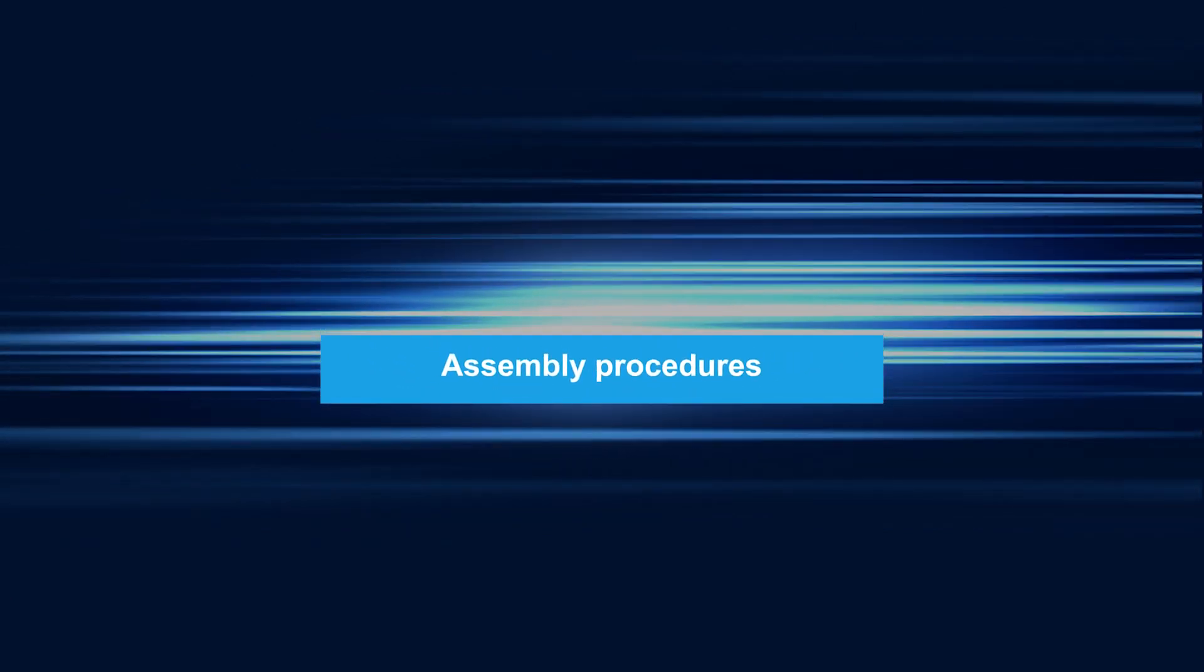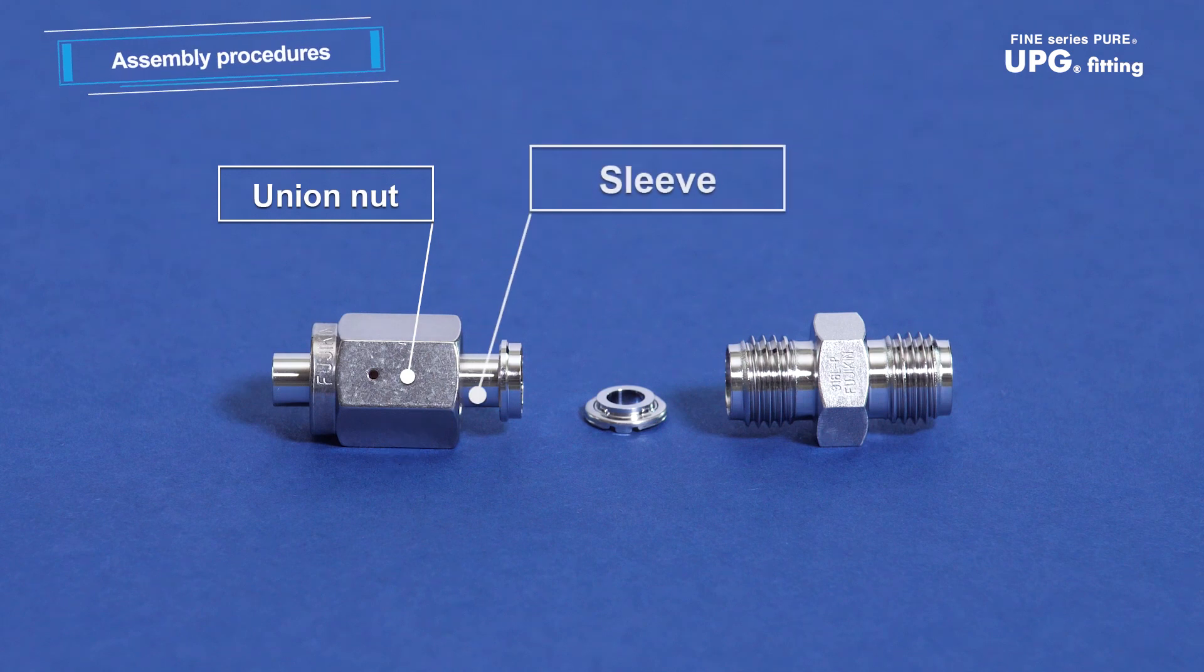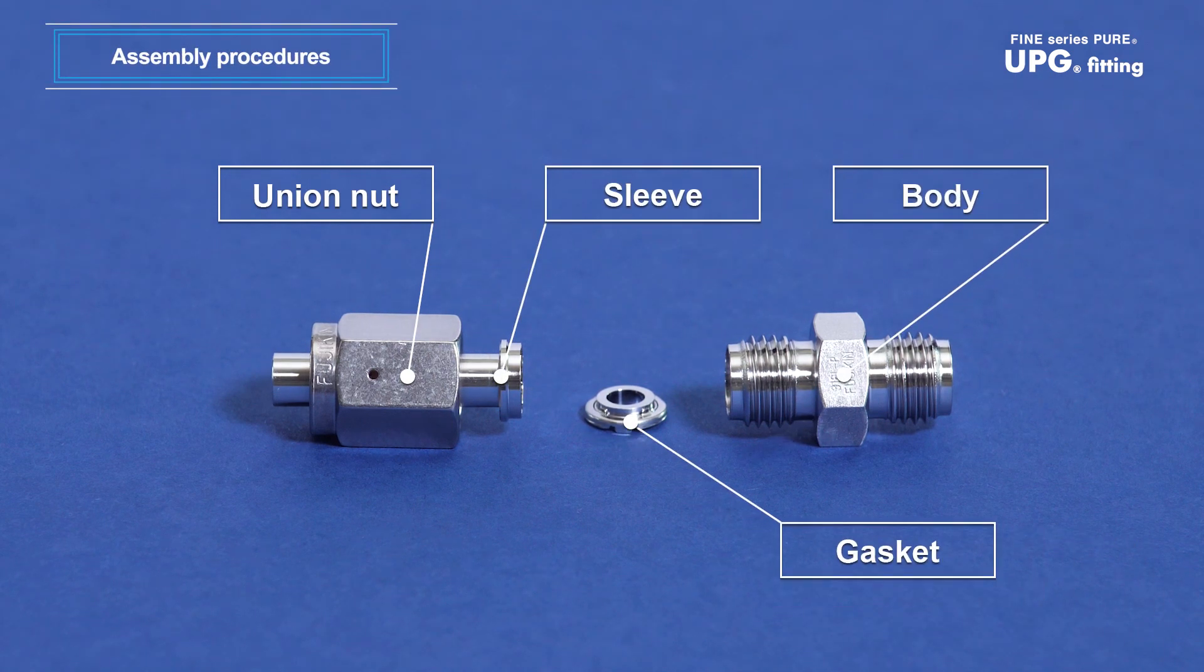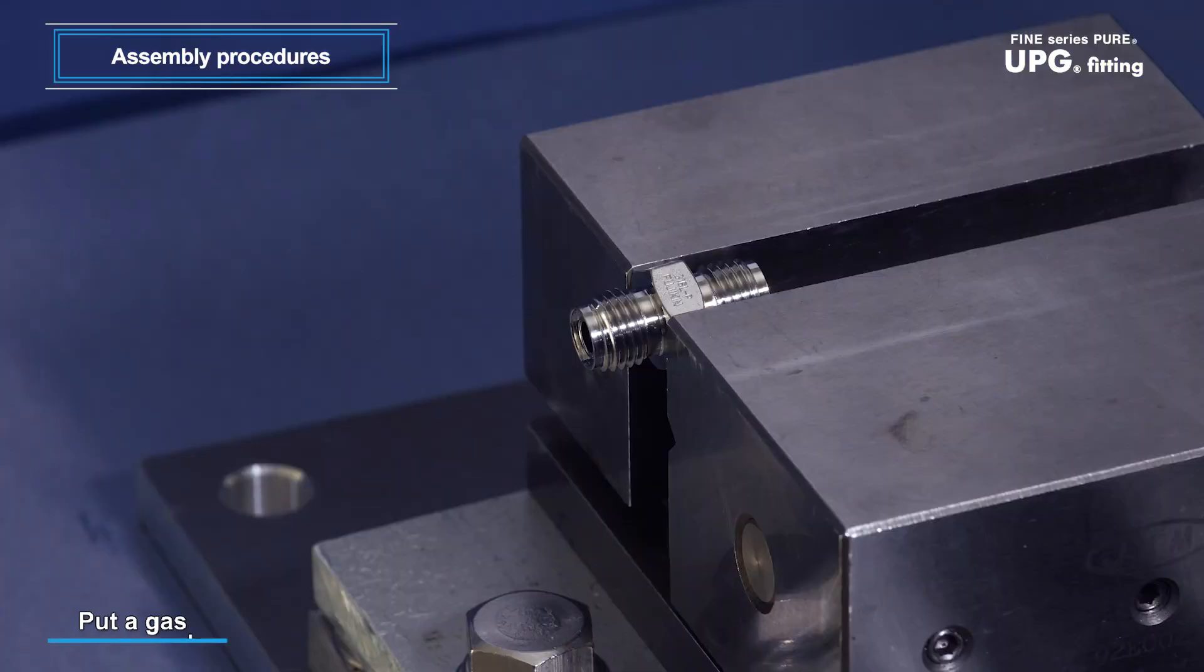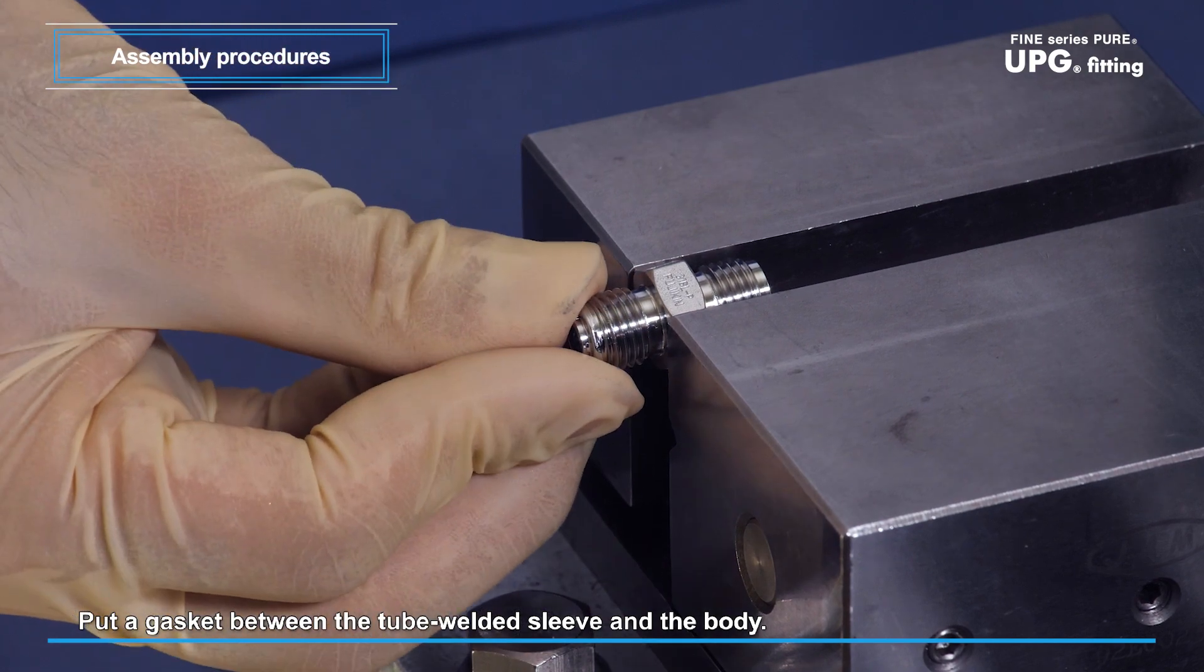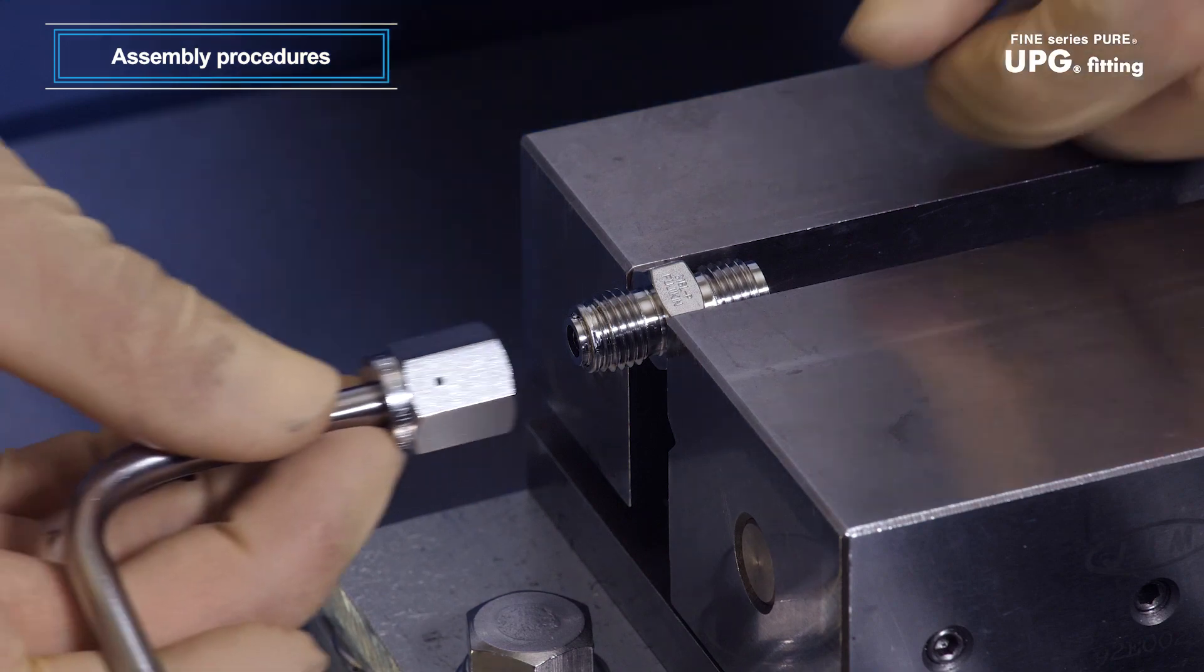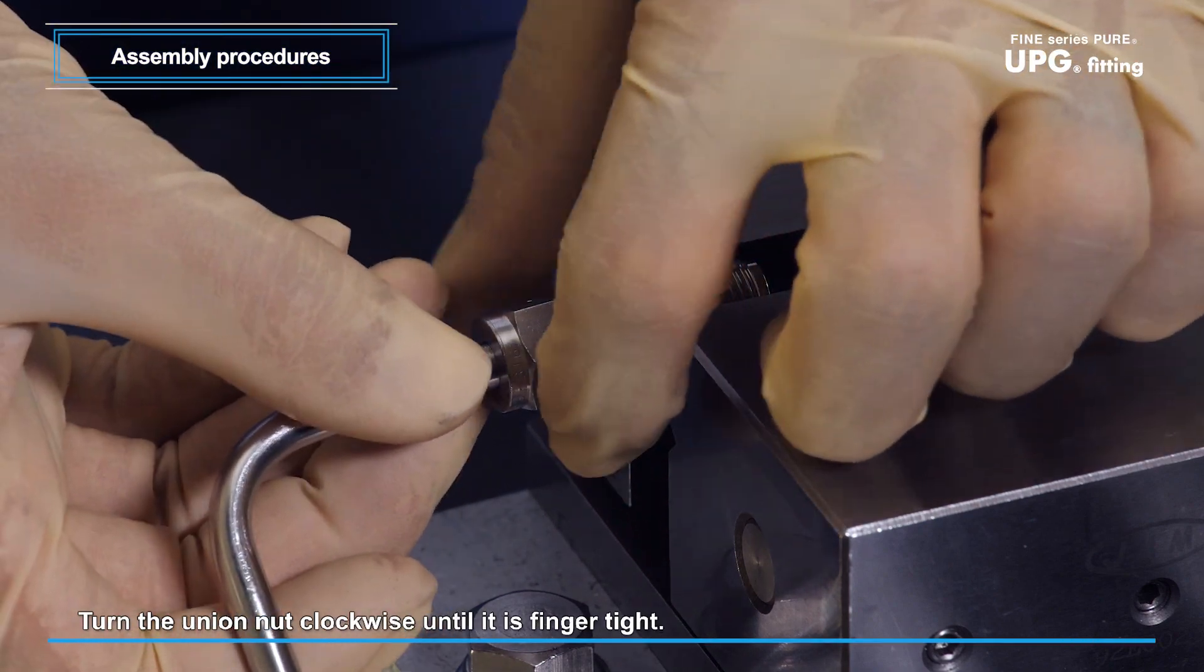Assembly Procedures: Make sure that all parts for a UPG fitting are complete and available for ready use. Put a gasket between the tube welded sleeve and the body, and turn the union nut until finger tight.